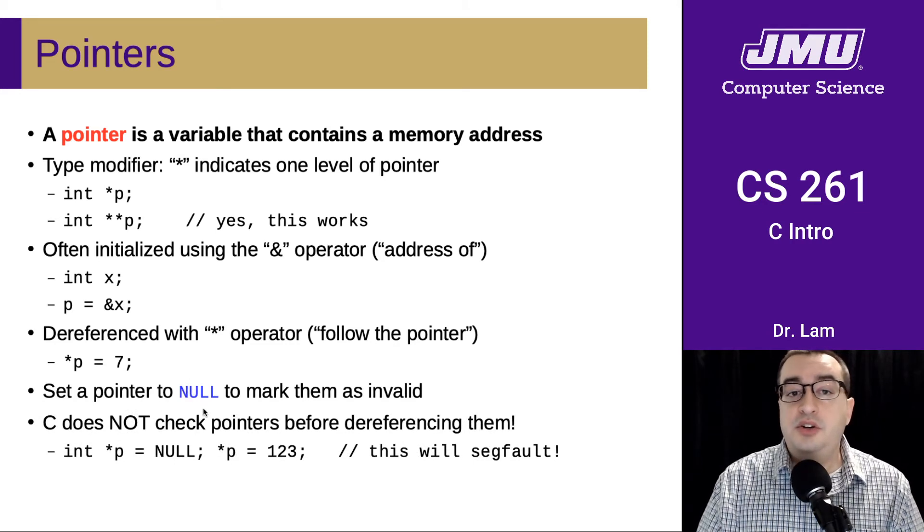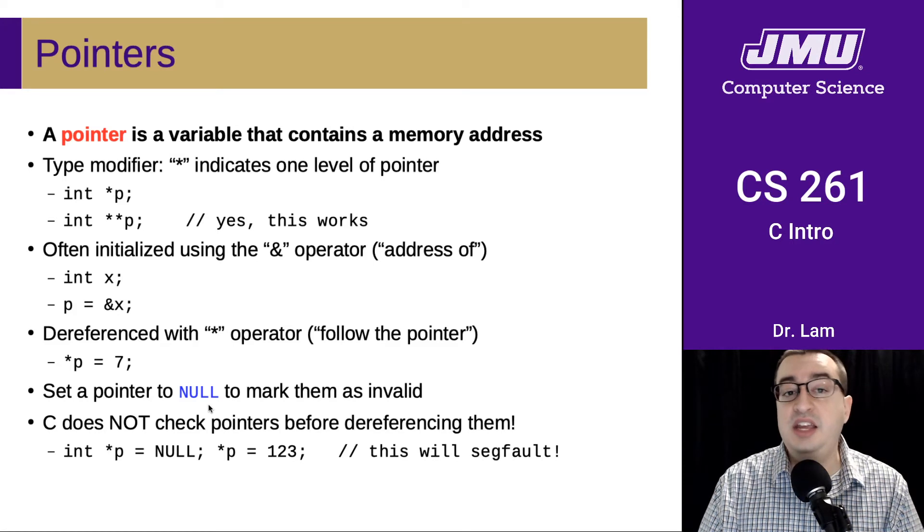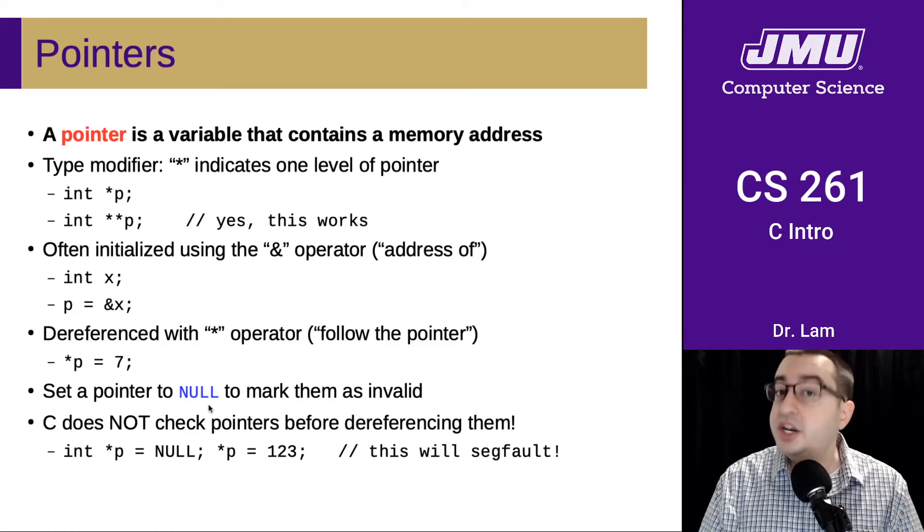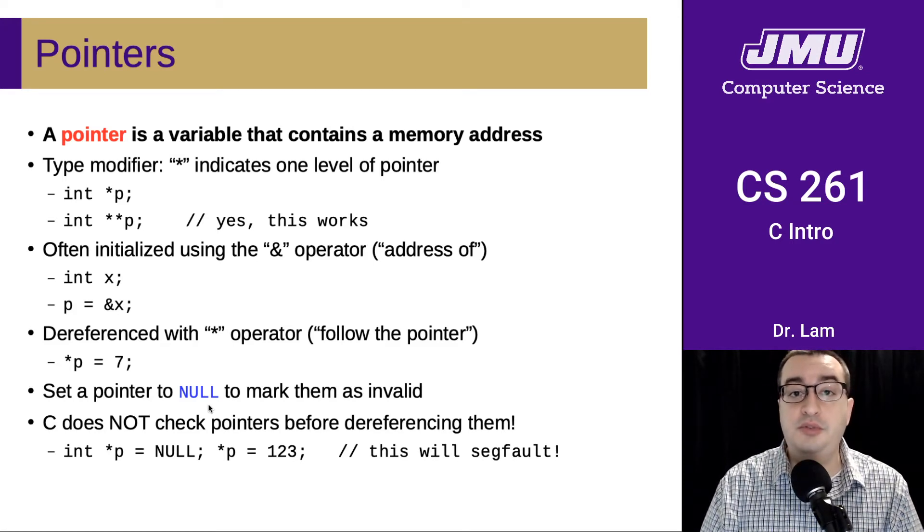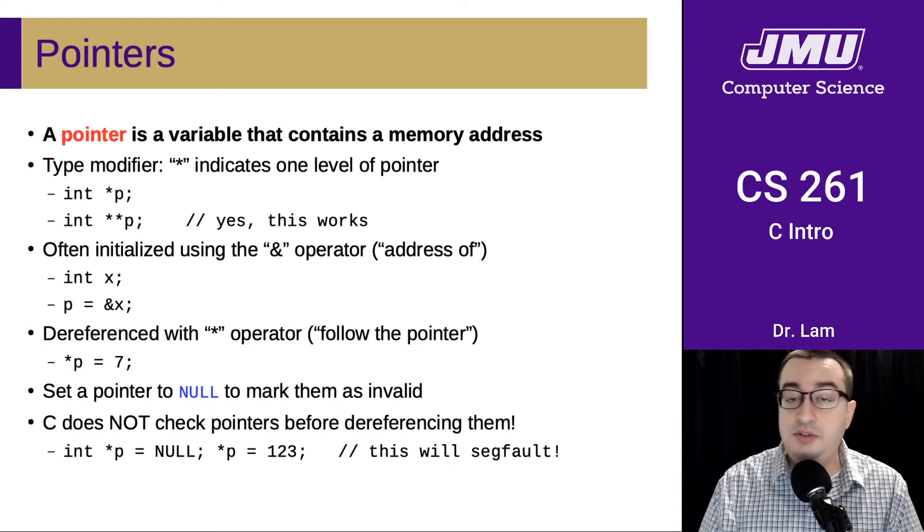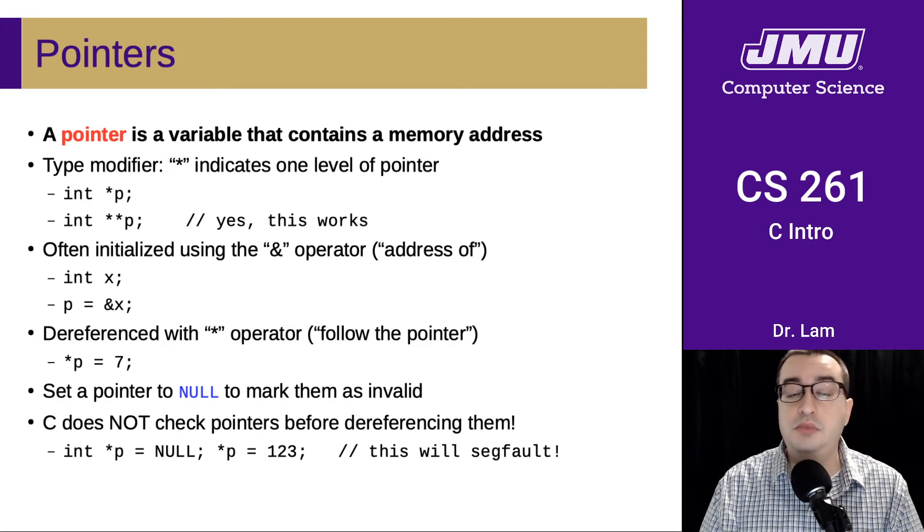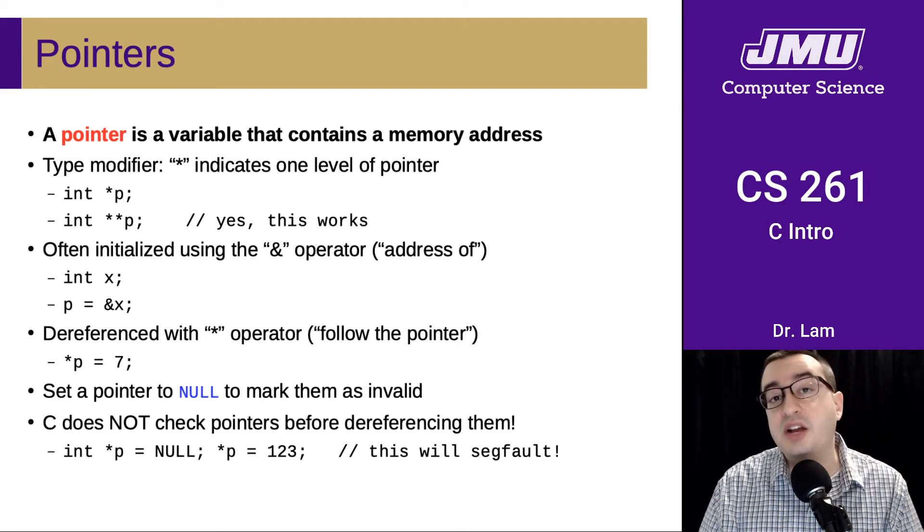You can set a pointer to a special value called null. And this marks them as invalid. C does not check for null pointers before dereferencing them. And so in Java, if you had a null reference, you would get a null dereference exception. But in C, it doesn't check for this.